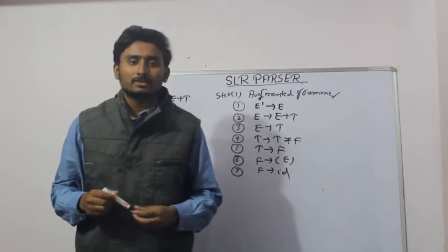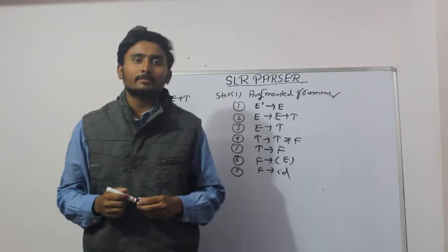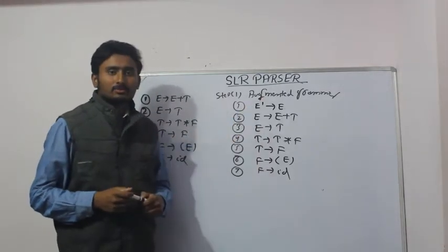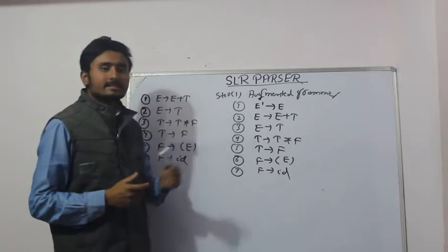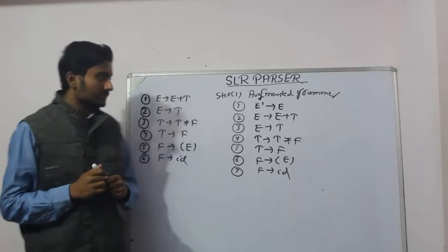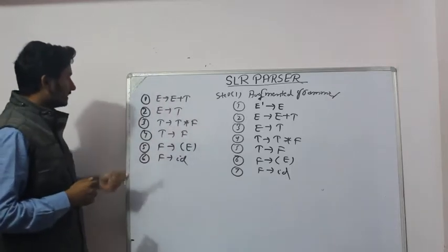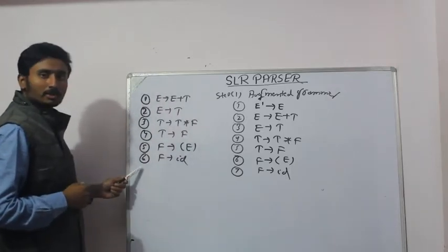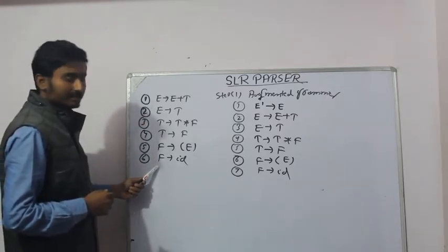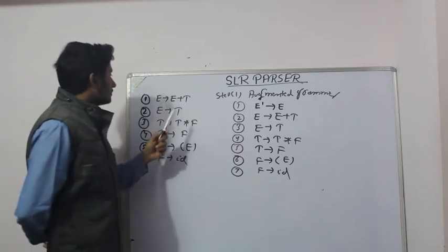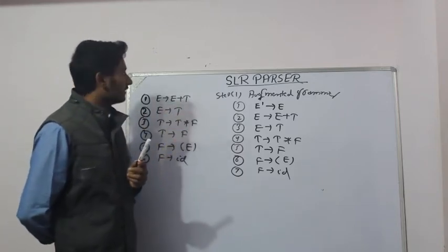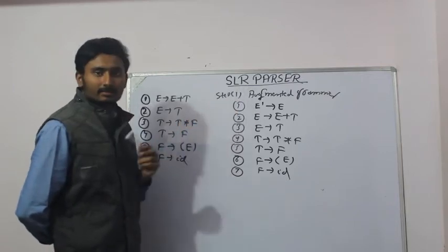Hello friends, welcome to Learn It by Fun. We are continuing with our lecture on compiler design. Today's point of discussion will be the SLR parser, which stands for Simple LR parser. We are given a grammar with six productions, where E is the start symbol and the last production is F→ID. With this grammar, we have to construct the SLR parse table.